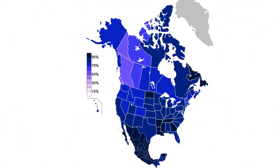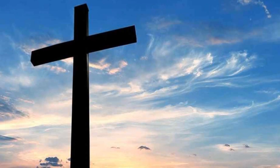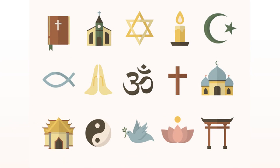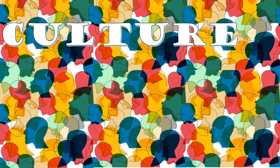85% of North Americans believe in religion. Christianity is the largest religion in the United States, Canada, and Mexico — according to a 2012 survey, 77% of the population considered themselves Christians. Other minority religions include Jews, Buddhists, Hindus, and Muslims. Current North American culture reflects ethnic patterns and the influence of European colonists, indigenous people, and African Americans.